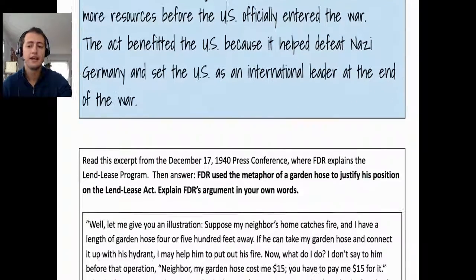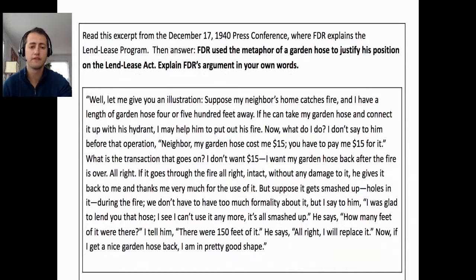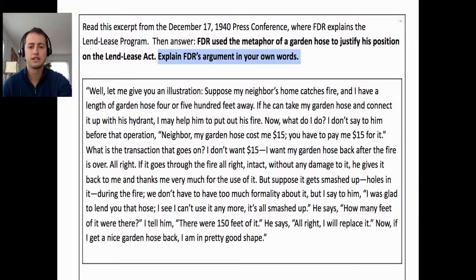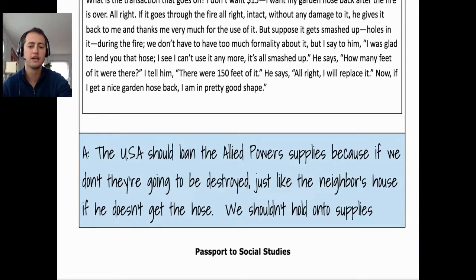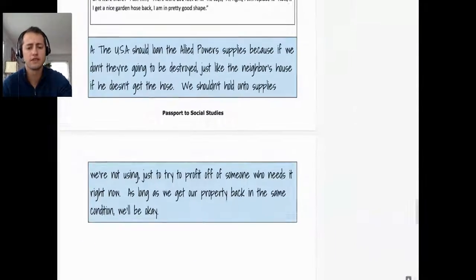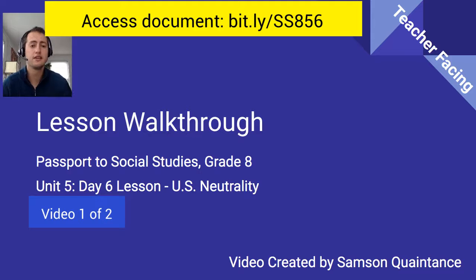The final question refers to the press conference in which FDR explains the Lend-Lease Act. This has a variety of answers since it asks students to explain FDR's argument in their own words, but potentially an answer could be that the US should loan the Allied powers supplies because if they don't, they'll be destroyed — just like a neighbor's house if he doesn't get the hose. We shouldn't hold on to supplies we're not using just to profit off someone who needs them, as long as we get our property back in the same condition. There's a variety of answers students can give to that. Make sure to access the link to make a copy and adjust the document for your students.